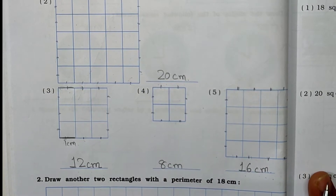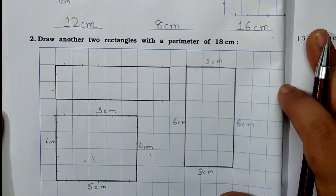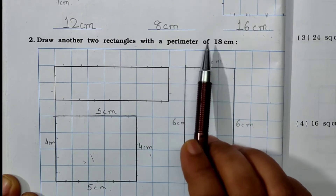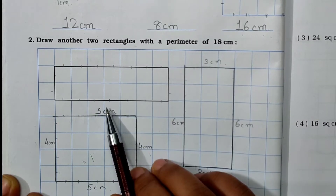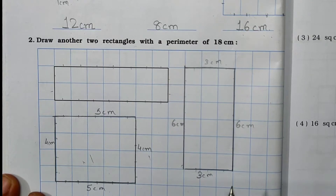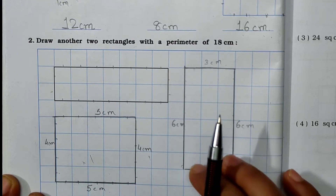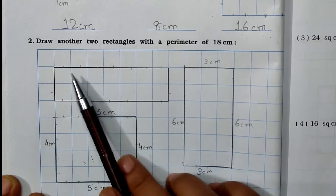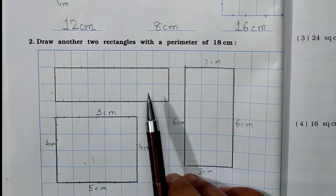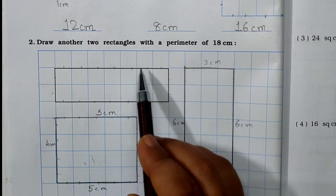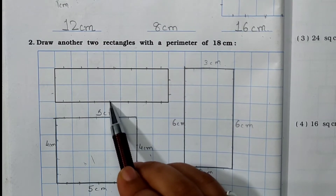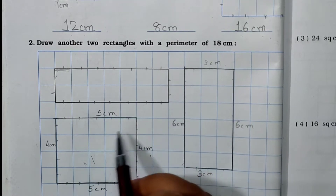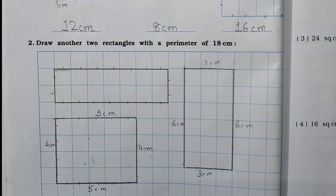Now see Main 2. Read the question: draw another two rectangles with a perimeter of 18 centimeters. Here one rectangle is already given. You have to draw two more rectangles such that their perimeter becomes 18 centimeters. The given rectangle's perimeter: counting 1 through 18 — all units are 1 centimeter, total is 18 centimeters.